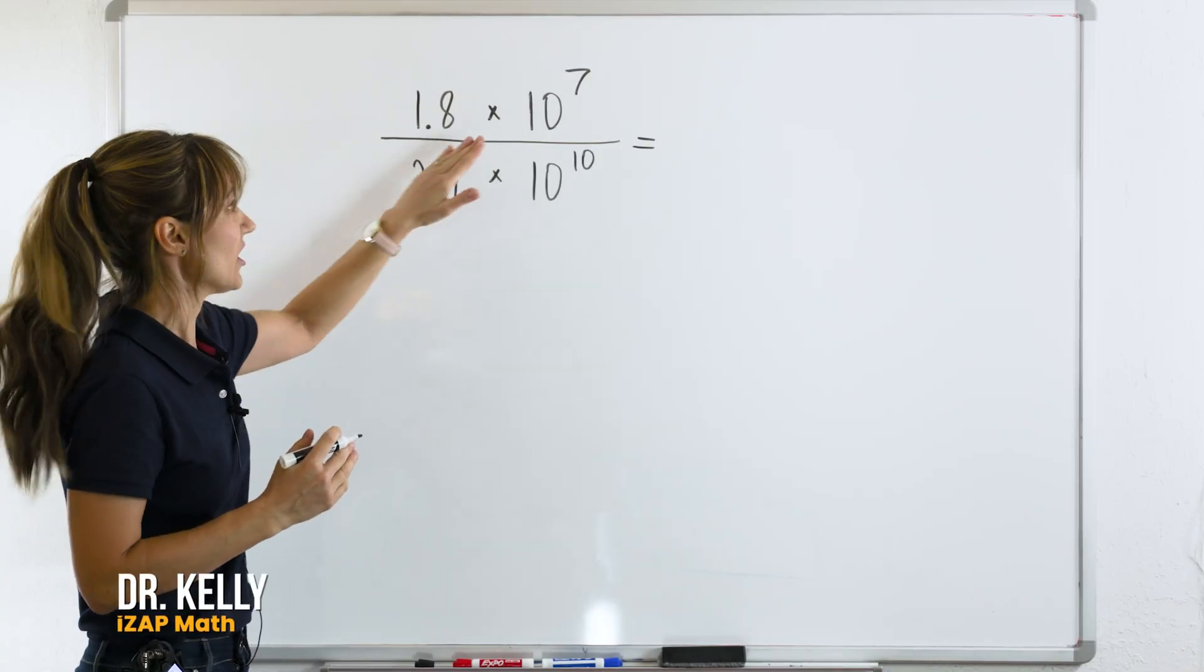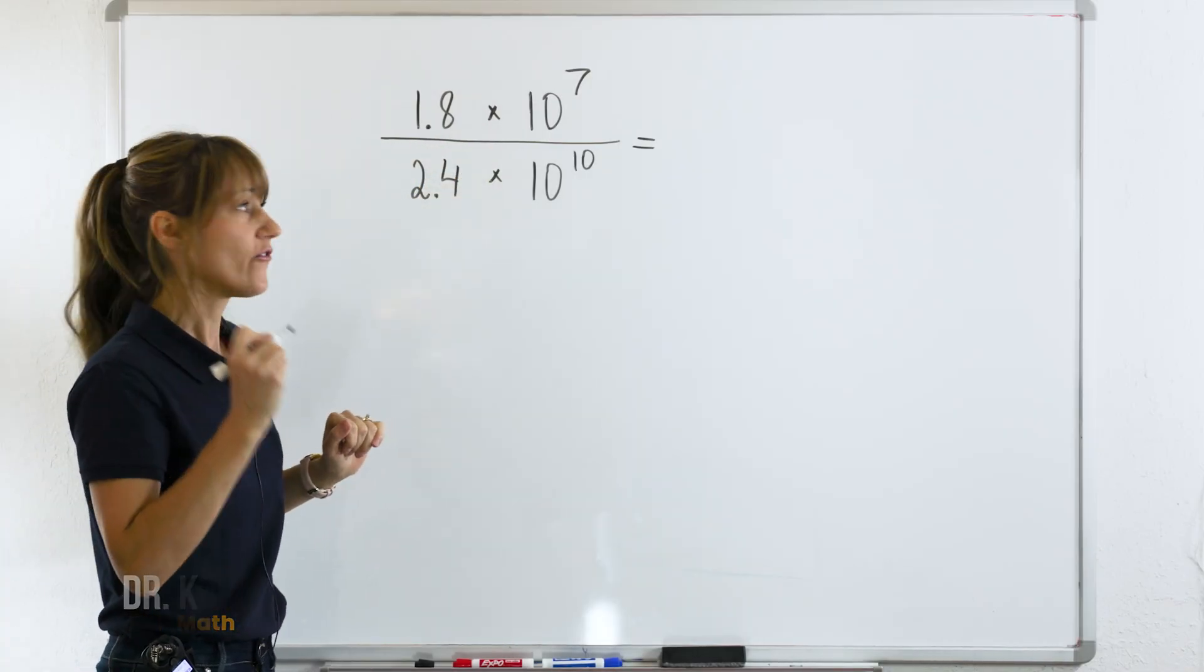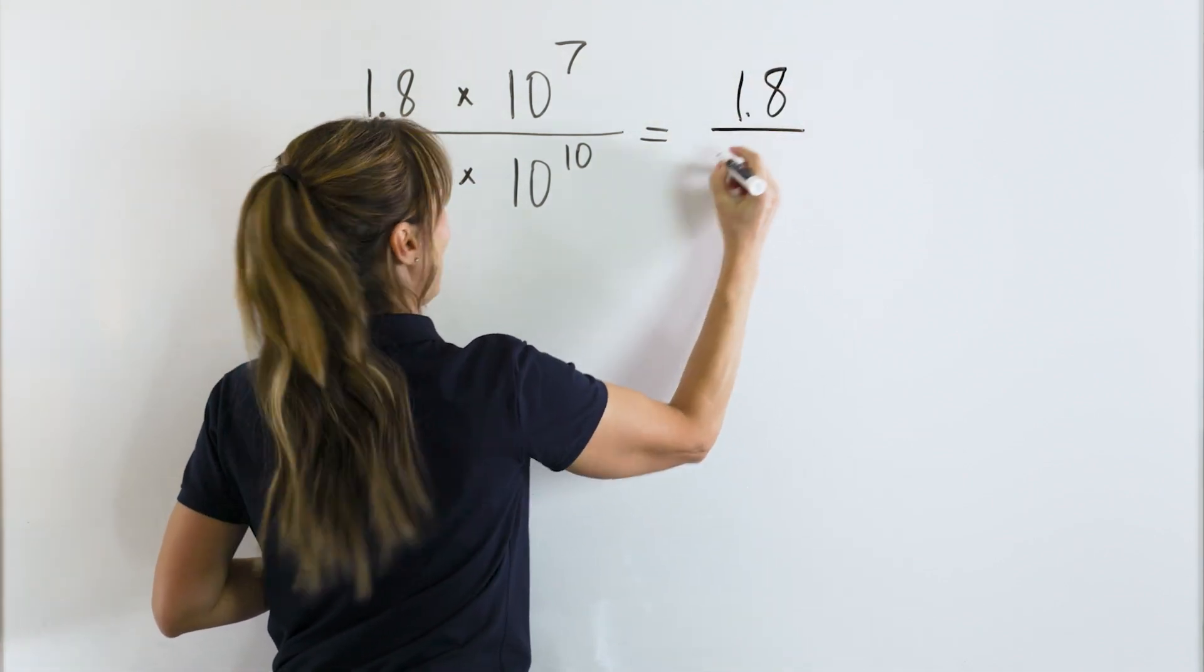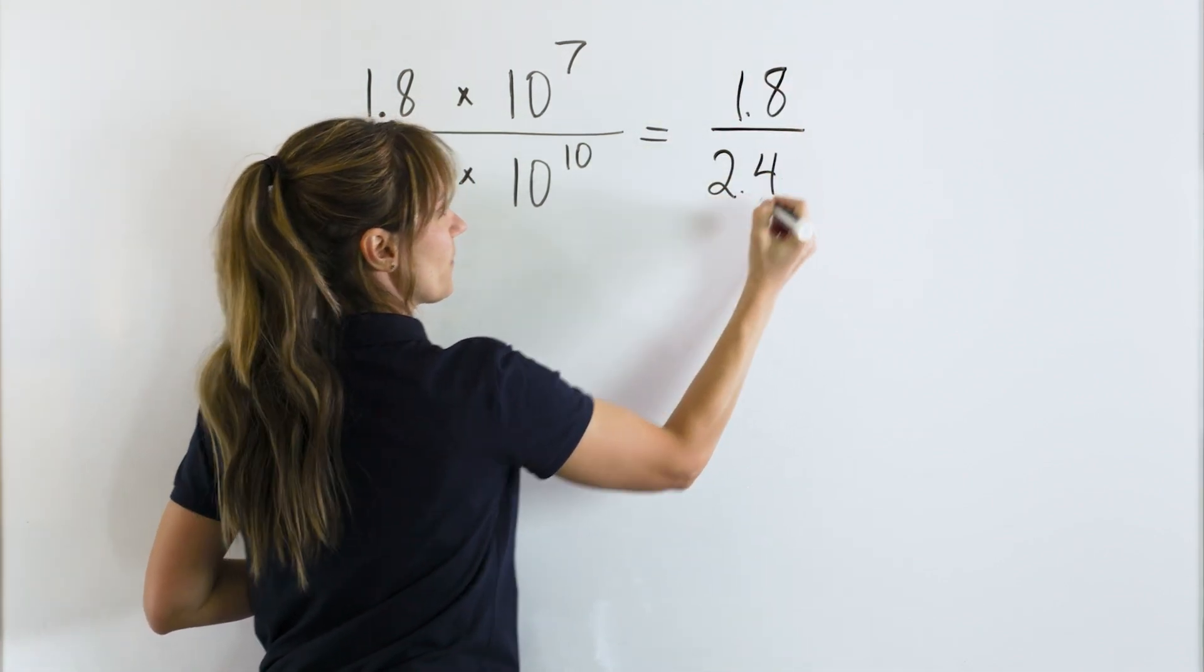We are dividing two numbers in scientific notation. First, we will divide 1.8 by 2.4.